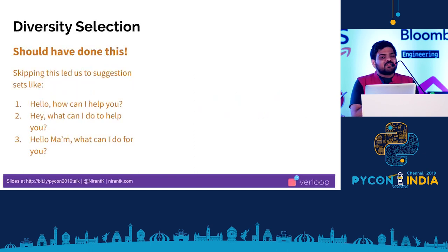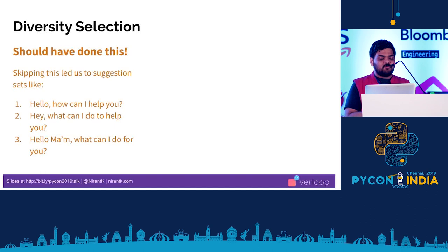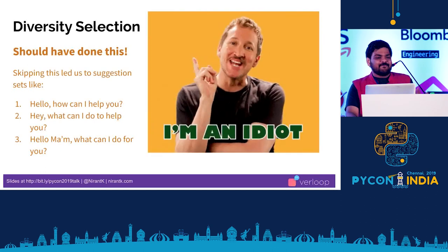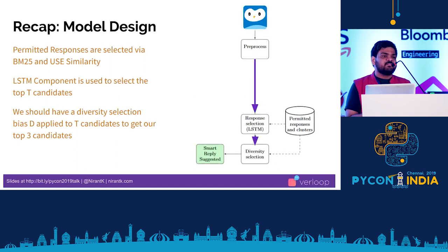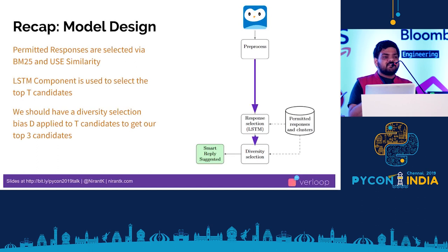Diversity selection was another mistake — I really should have done this. Because we did not have diversity selection, we ended up suggesting responses like 'hello, how can I help you?', 'what can I do for you?', 'what can I do for you again?' — which is really bad. I could have learned from what Gmail did. To recap: permitted responses go through a selection mechanism based on rank and retrieval, then we select the top three candidates, and then we apply a diversity bias to diversify those top three candidates. That is the simplified journey of how a message travels in Verloop's smart reply system.